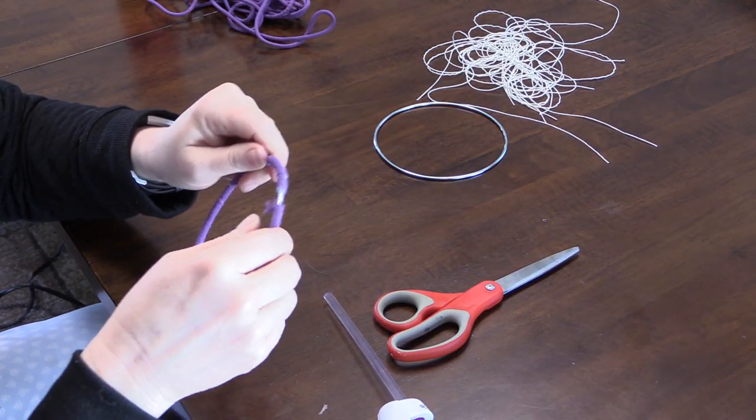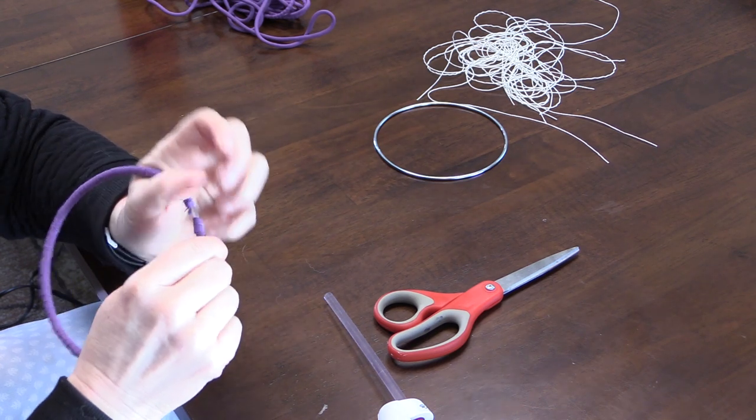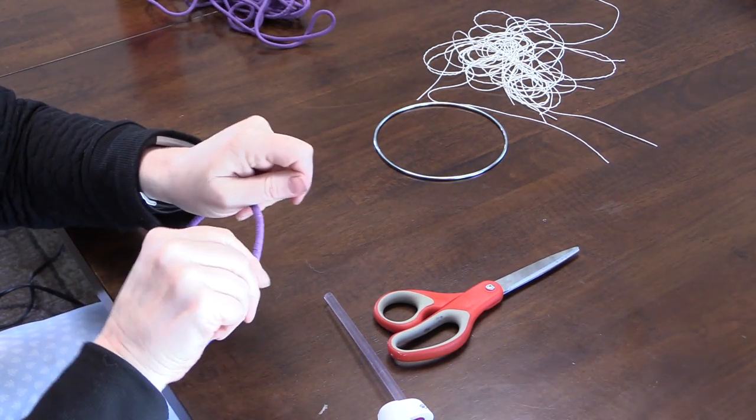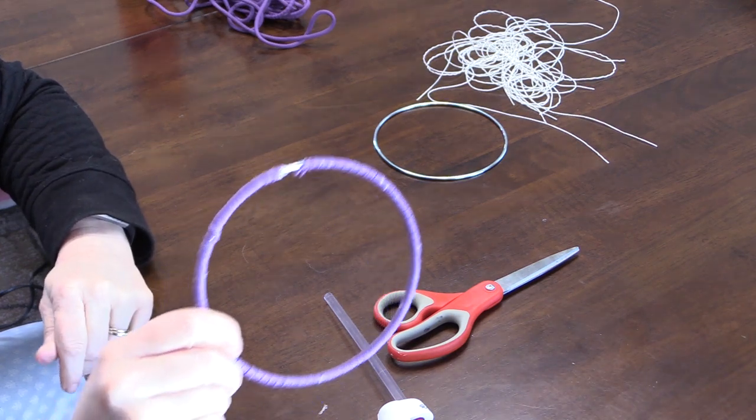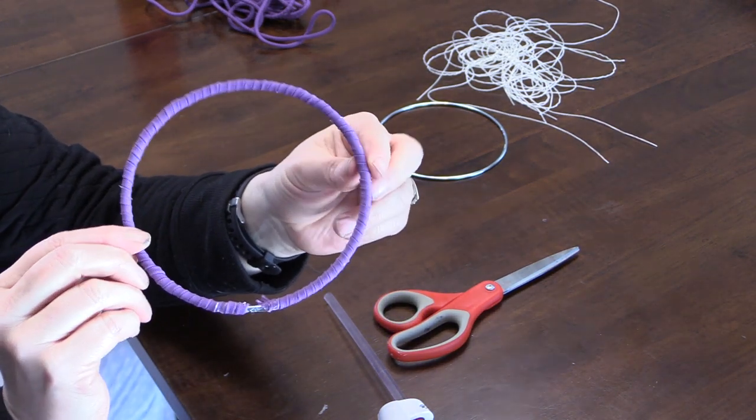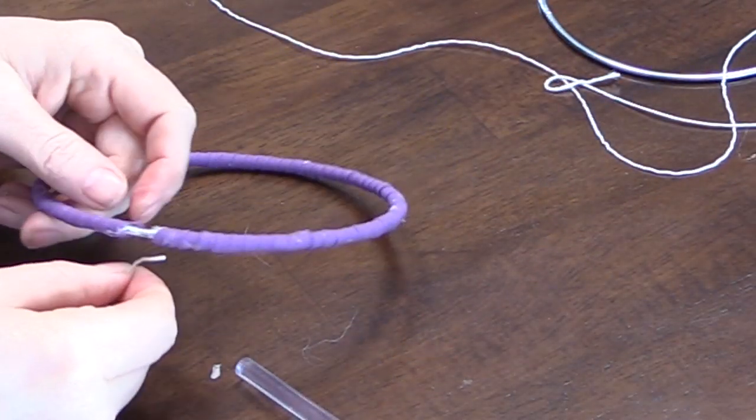And it doesn't have to be perfect because you're gonna be tying different pieces of fabric at the bottom, so even if there's a little gap like mine has, it's not a big deal I promise. Okay, so now that we've got the ring part done, now we're going to make the web and this really isn't very hard.